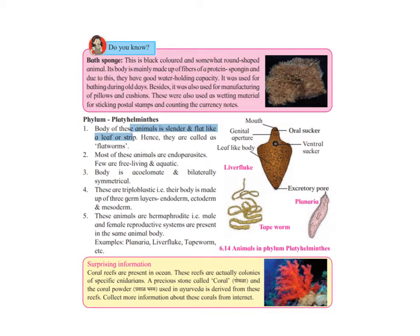Next is Phylum Platyhelminthes. Platyhelminthes is a flat worm — its body is like a ribbon, completely flat, very slender and thin like a strip. That's why they are called flat ones. They are mostly endoparasites.